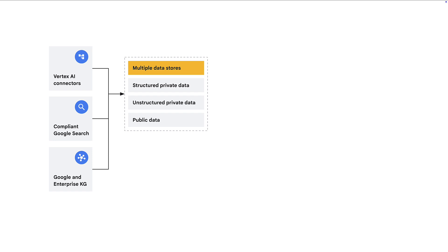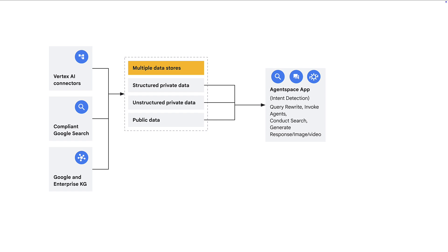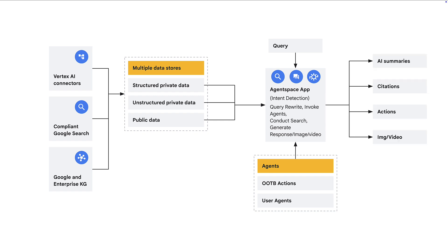For the architects out there, here's how it all fits together. We have the connectors, Google Search, and the Enterprise Knowledge Graph as data sources, all connecting to the Agent Space app, which performs intent detection, semantic search, query rewrites, generation, and media content generation. Then we plug in agents — which can be out-of-the-box Google-provided agents and actions, as well as user-built agents — and they produce artifacts like AI summaries with citations, actions in external systems, or media artifacts like images or videos.